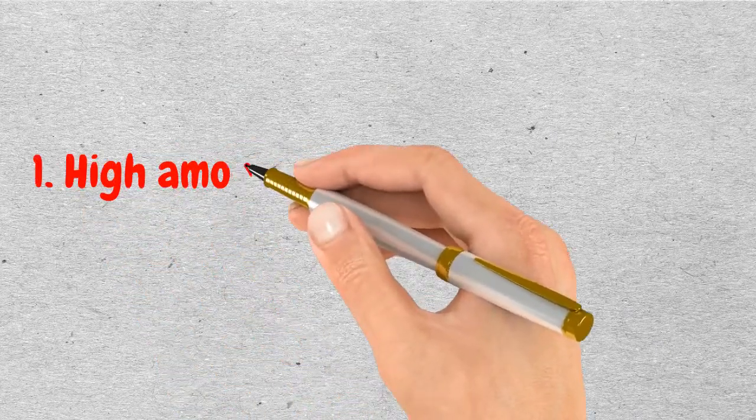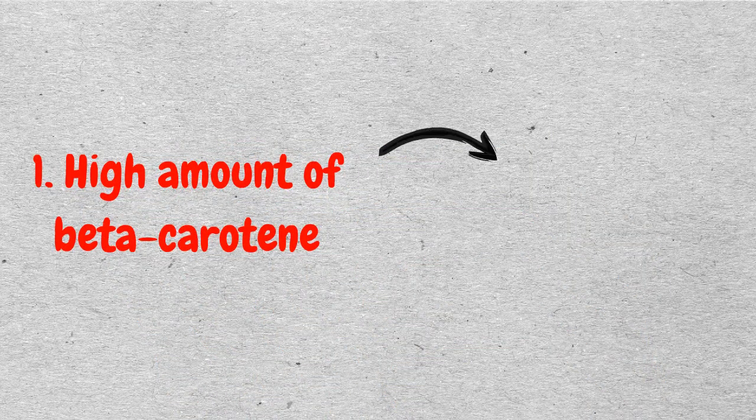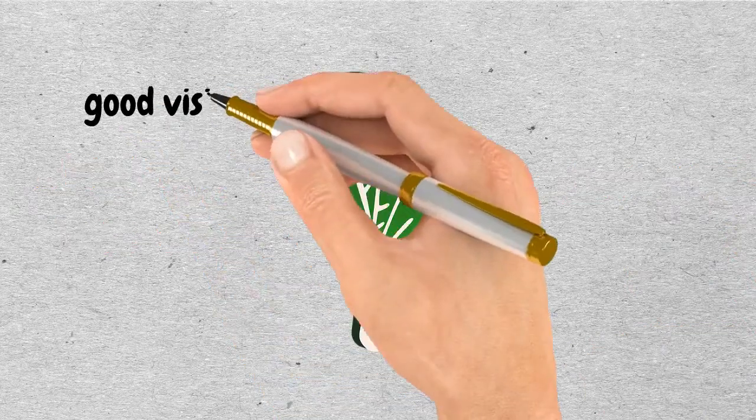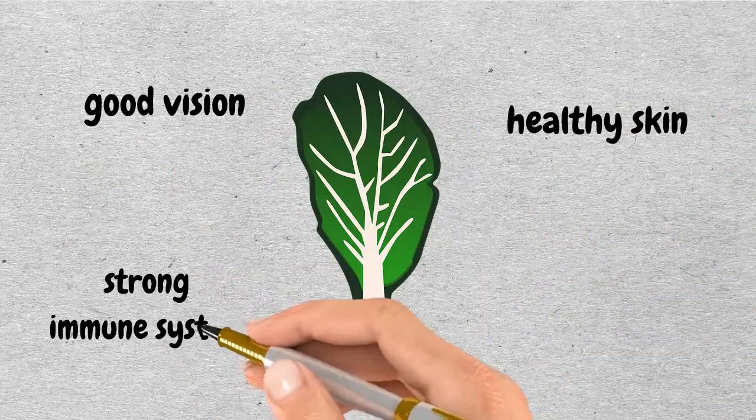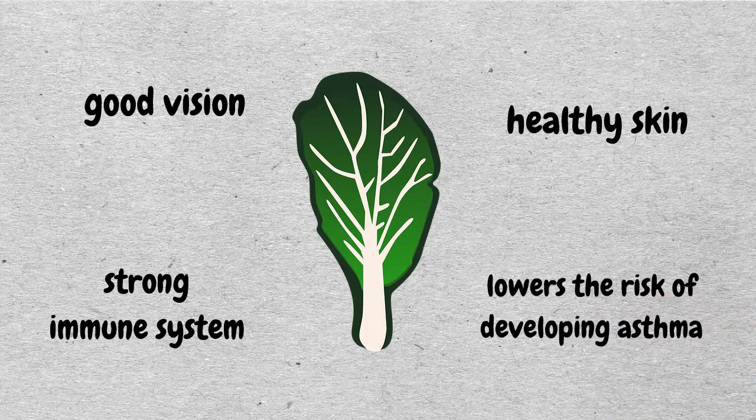First, spinach contains a high amount of beta-carotene, which is simply an inactive form of vitamin A. It contributes to good vision, healthy skin, a strong immune system, plus it's shown to lower the risk of developing asthma.